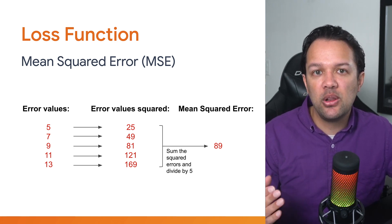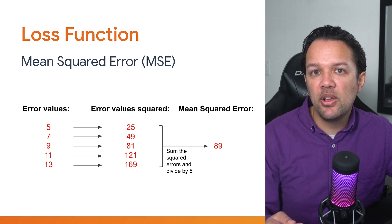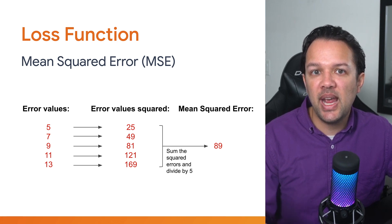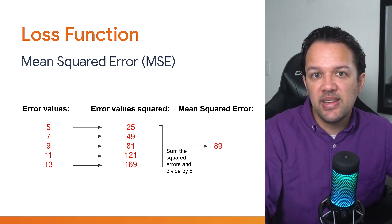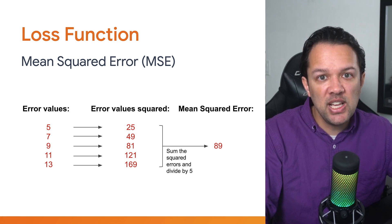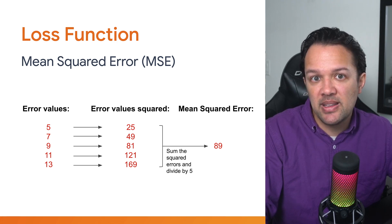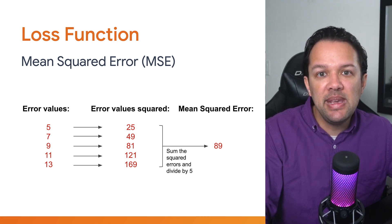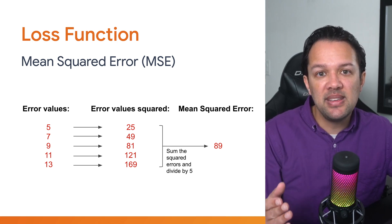For this, you can define something called a loss function. One common loss function is the mean squared error, which as you may have guessed, takes all the error values, squares them, meaning it multiplies the number by itself once, and then takes the mean of all of those by adding those results together and dividing by how many there are. For the example data you just saw, the MSE is 89.